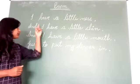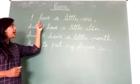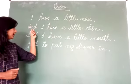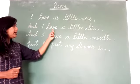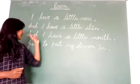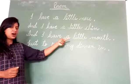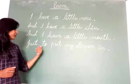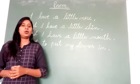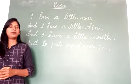So line number one, first line: I have a little nose, and I have a little chin, and I have a little mouth, just to put my dinner in. Now I am going to tell students that you can go to the poem.